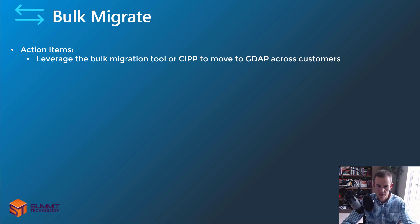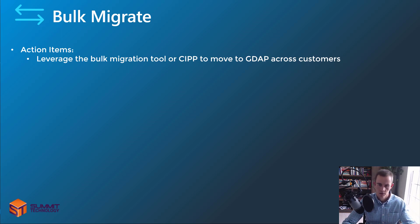The last step is really just to bulk migrate your customers. You've done all your proper testing, given proper communications — now you go through and leverage the bulk migration tools from CIPP or the bulk migration tool from Microsoft to move all of your customers. Just note that with CIPP it does go through and actually establish security groups for you, so some of those earlier steps would be different in that particular use case. I have a whole video demoing out the use case for both tools which I'll link below.